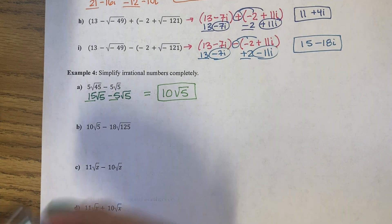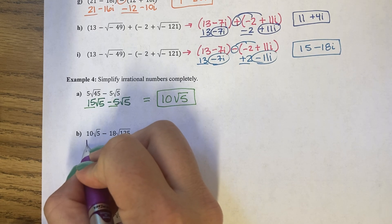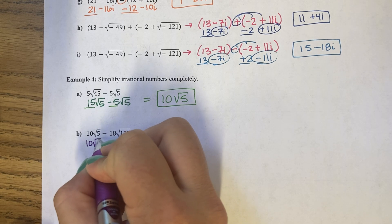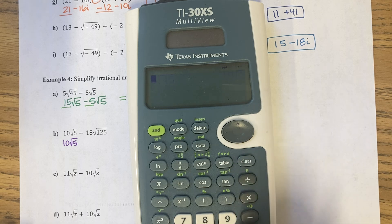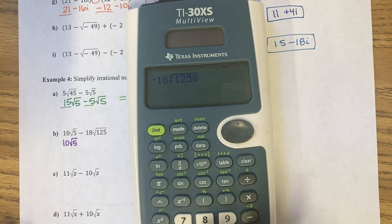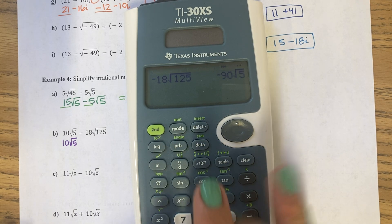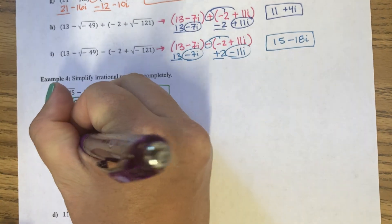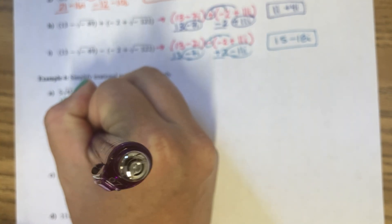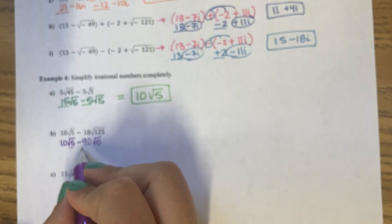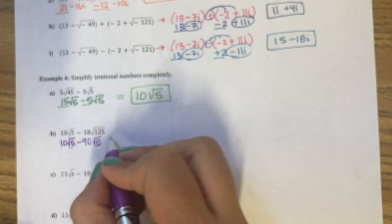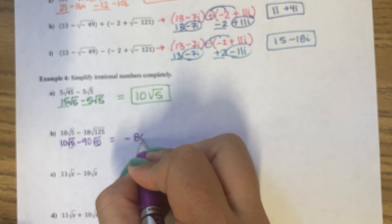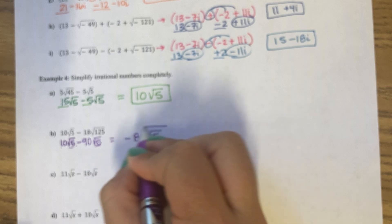Let's check the next one. I have 10 root 5 — 5 won't simplify. But I do have negative 18 square root 125, which simplifies to negative 90 root 5. Now that my roots match, I can do 10 minus 90, which would be negative 80 root 5.